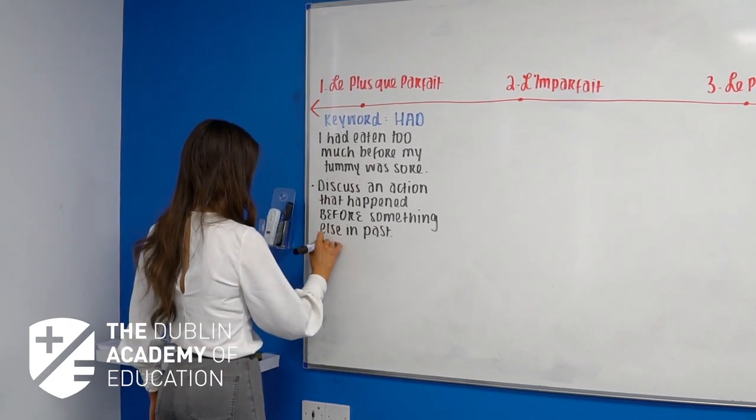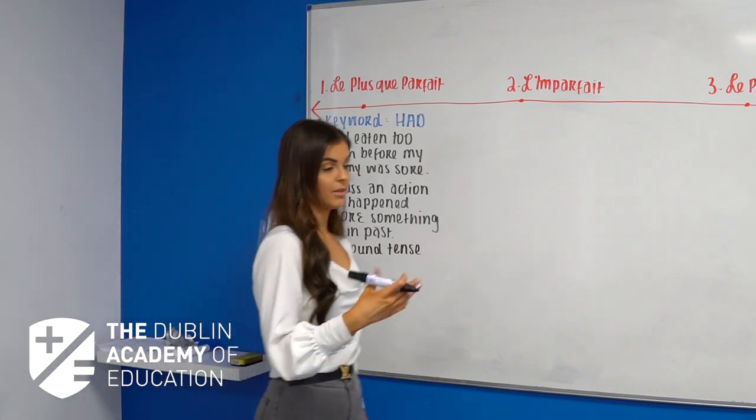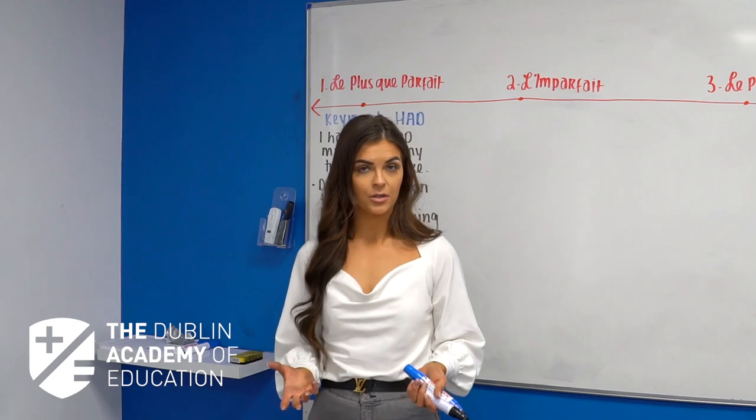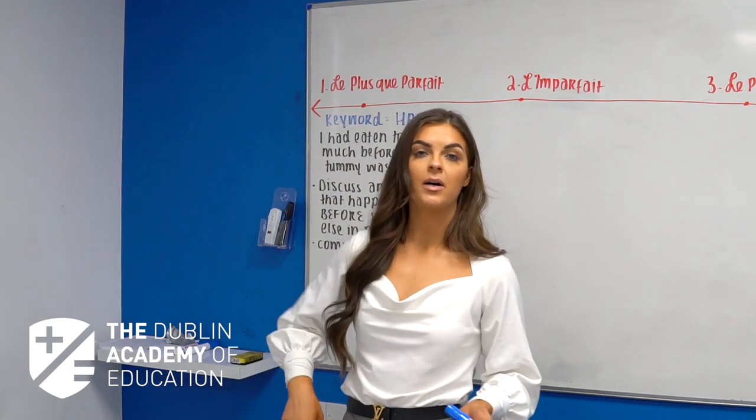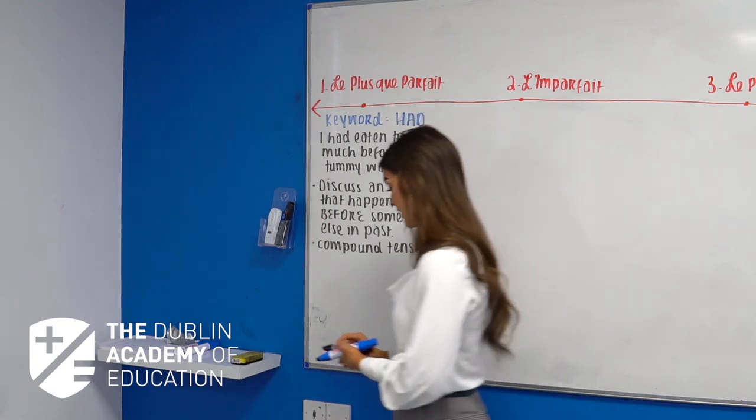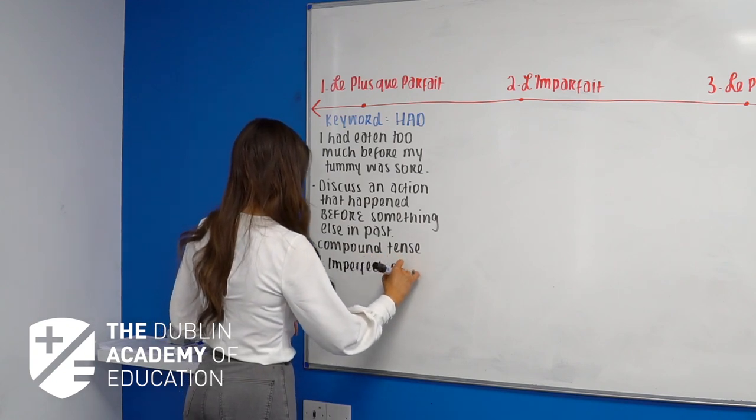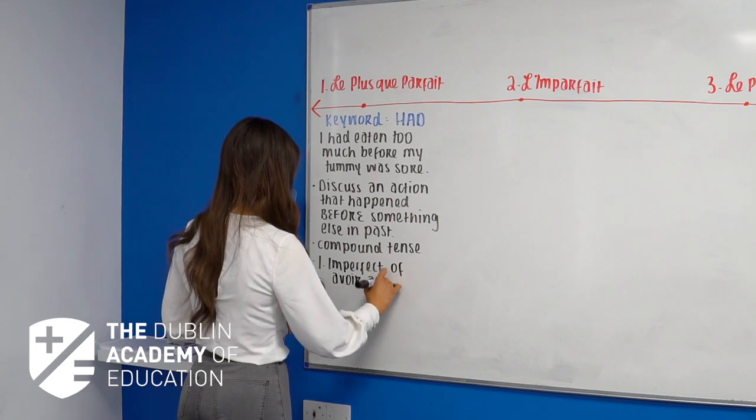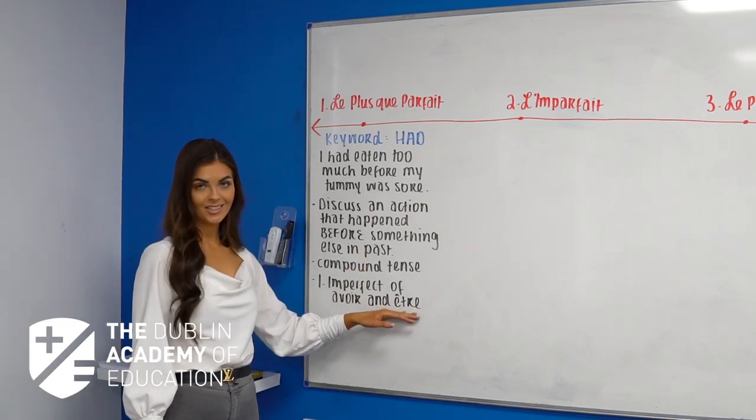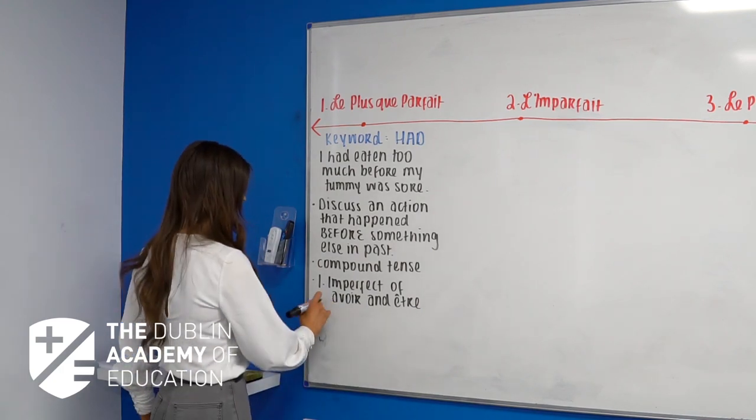How we're going to form this in French is very similar - this is like the passé composé's older brother. We call it a compound tense, the same as a compound movement in the gym. If you went to the gym and did a deadlift, you'd use more than one muscle group - your hamstrings, glutes, quads, posterior chain, core. A compound tense in grammar is a tense of more than one part. Our parts for this tense are going to be the imperfect of avoir and être.